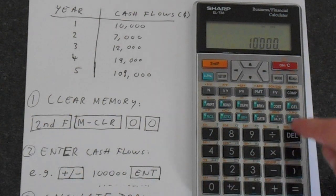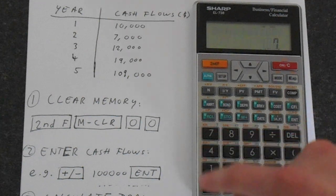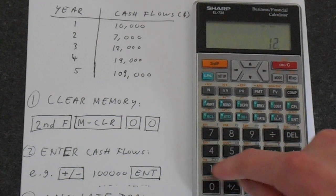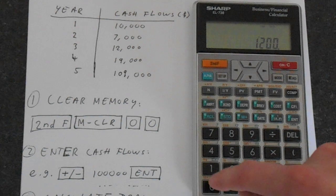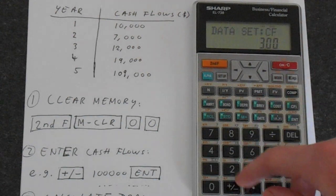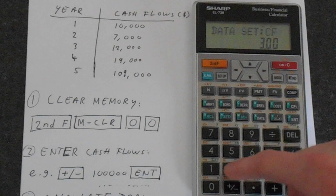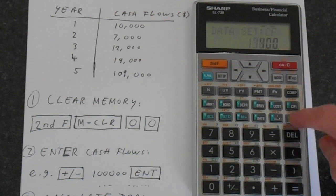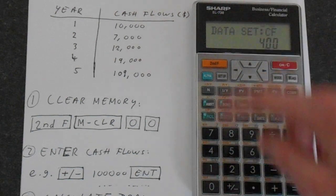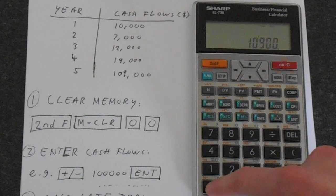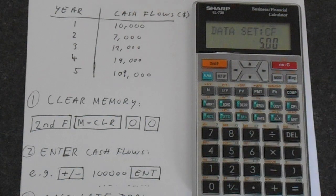Now enter the remaining cash flows in exactly the same way: ten thousand, enter; seven thousand, enter; twelve thousand, enter. There's a nice apostrophe shortcut to type these in quickly. Then nineteen thousand, enter, and finally a cash flow of one hundred and nine thousand — perhaps representing a sale of the investment — enter. That's all the cash flows stored in memory.